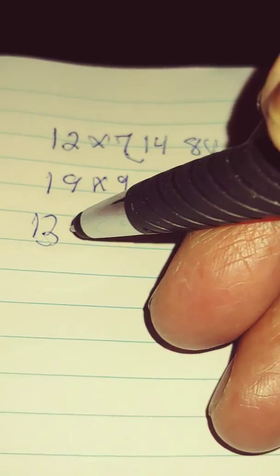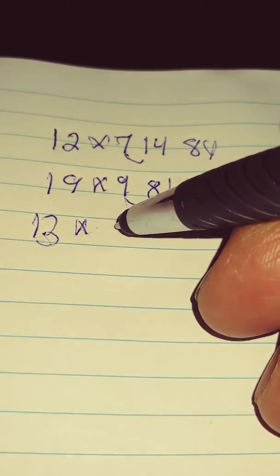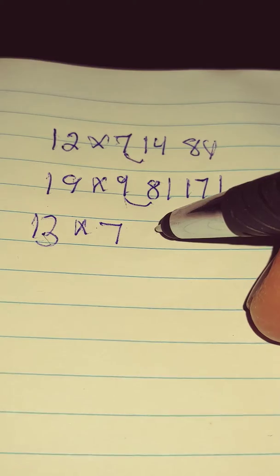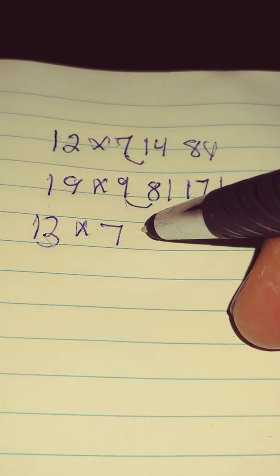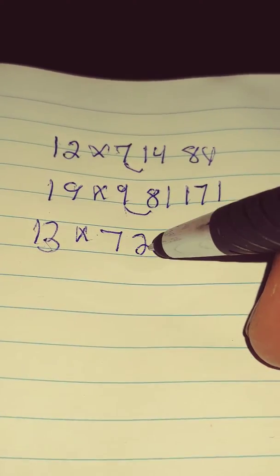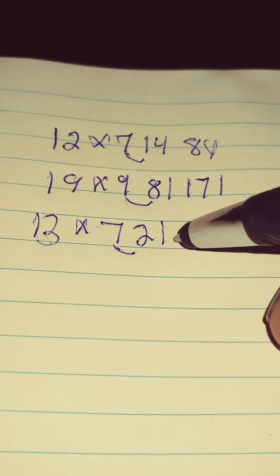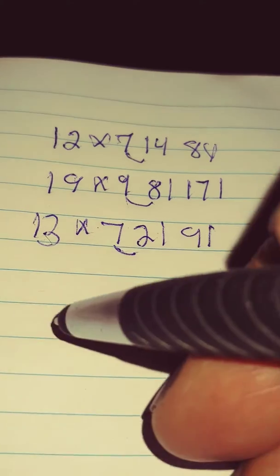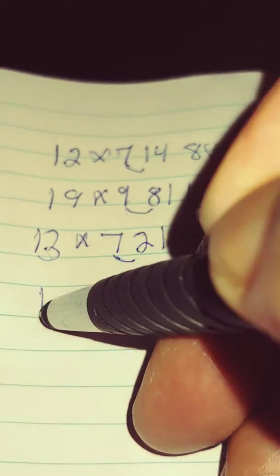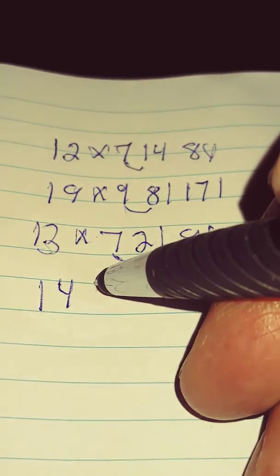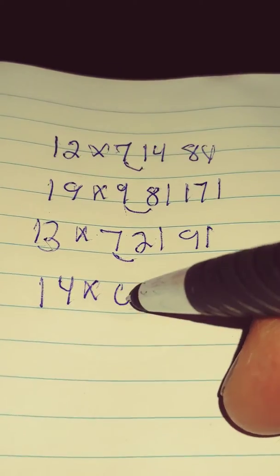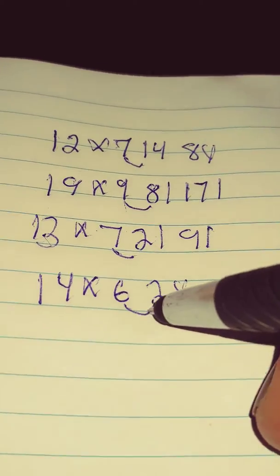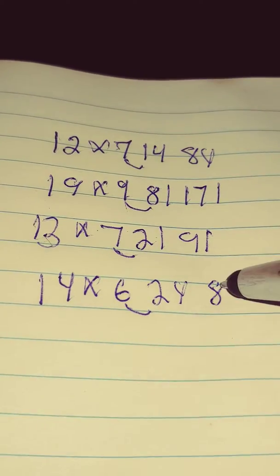13 times 7. Again, what you see is 3 times 7 is 21, so you know it's a 91. Just work with me with this, we'll get this together. 14 times 6 is 24. The answer is going to be 84.